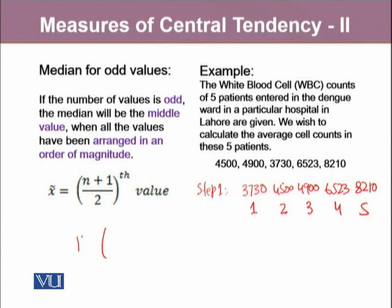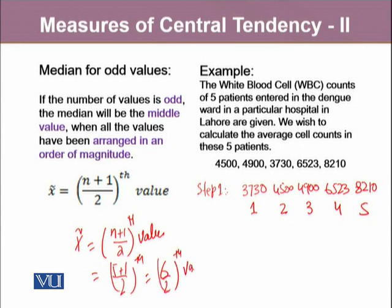We calculate n plus 1 by 2th value as the median. So n plus 1 over 2 will be 5 plus 1 by 2, which is 6 by 2, equal to the third value. This third value is the median. This is a value above which there are two observations, which is 50%, and below it two observations.